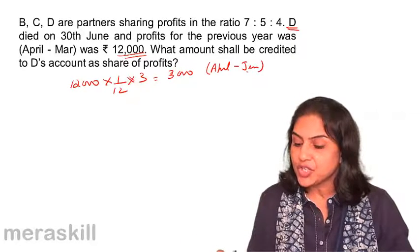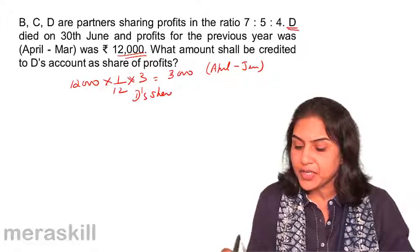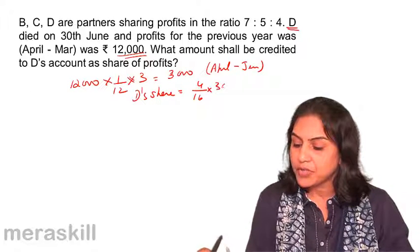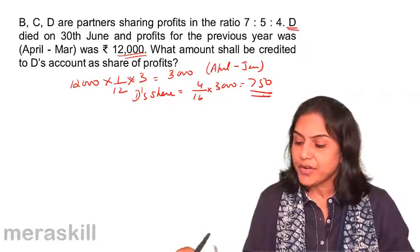And what is D's share? D's share in this profit is 4 by 16 of 3,000, that is equal to 750.